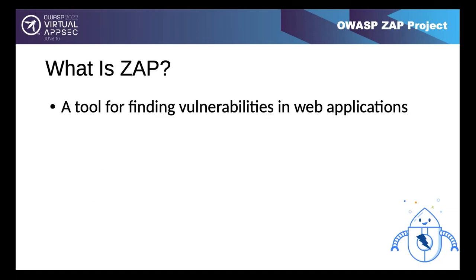ZAP is a tool for finding vulnerabilities in web applications. The key thing is that it's trying to find vulnerabilities in custom web applications - not looking for CVEs typically, but for new vulnerabilities in new applications. This means if you write a new web application that no one has ever looked at, there will be no CVEs, but ZAP will still potentially find a whole load of potential problems with it.